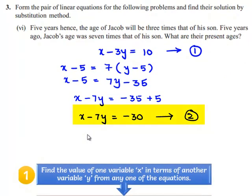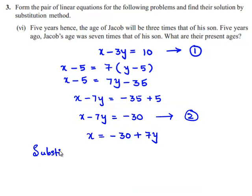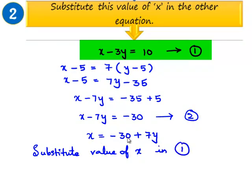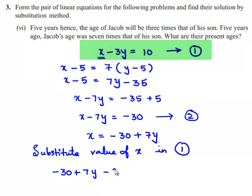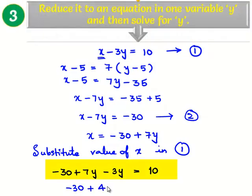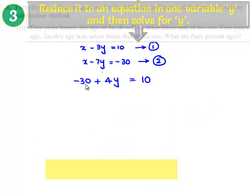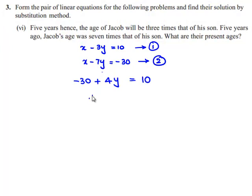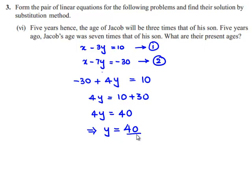Equation 2 can be written as x is equal to minus 30 plus 7y. Substituting the value of x in equation number 1: minus 30 plus 7y minus 3y is equal to 10. So minus 30 plus 4y equals 10. Transposing minus 30 to the right hand side: 4y equals 10 plus 30, which is 40. Therefore y equals 40 divided by 4, which is 10.